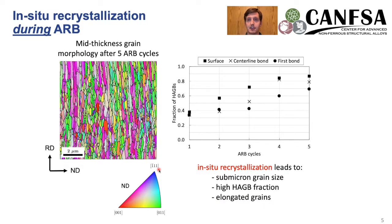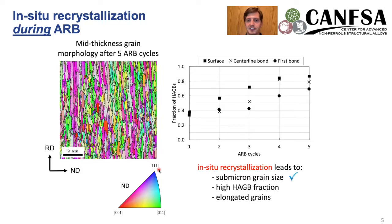Let's discuss the microstructure we get after accumulative roll bonding. Here's an EBSD inverse pole figure map that shows the grain size after five ARB cycles, and we can start to tick off some of the boxes as requirements for grain boundary sliding. We have a sub-micron grain size and we also have a high angle grain boundary fraction. Unfortunately, we're still left with quite elongated grains.